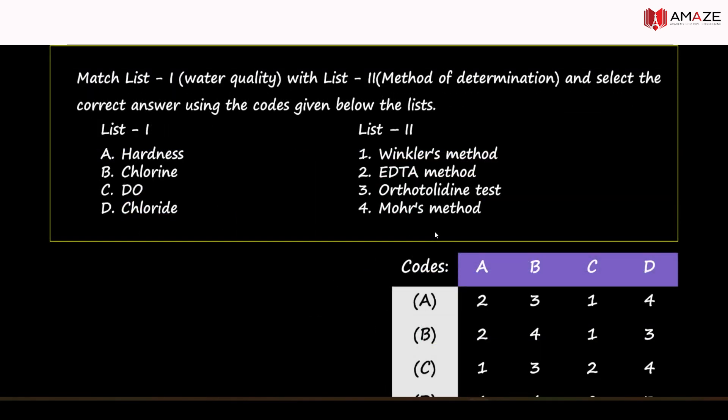Match the list of water quality parameters with the list of methods used for their determination. The parameters are: Hardness, Chlorine, DO (Dissolved Oxygen), and Chloride. The methods are: Winkler's Method, EDTA, OrthoTolidine Test, and Mohr's Method. Option A is for Hardness — hardness is determined by EDTA titration. So A should be matched to EDTA.